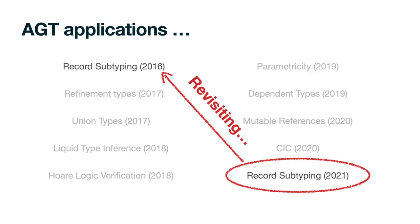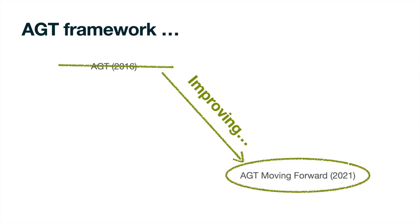In this paper, we revisit the first AGT development, identifying limitations of the original approach, and introduce further design guidelines for AGT, which provide extra properties not guaranteed by the original framework. We expect these guidelines to impact AGT developments moving forward.